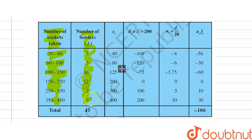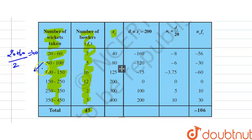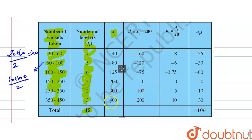The total sum of fi equals 45. xi is the midpoint of each class: for 20 to 60, xi = (20 + 60)/2 = 40; for 60 to 100, xi = (60 + 100)/2 = 80. Similarly, all xi values are found as (first term + last term)/2. For 350 to 450, xi = (350 + 450)/2 = 400.